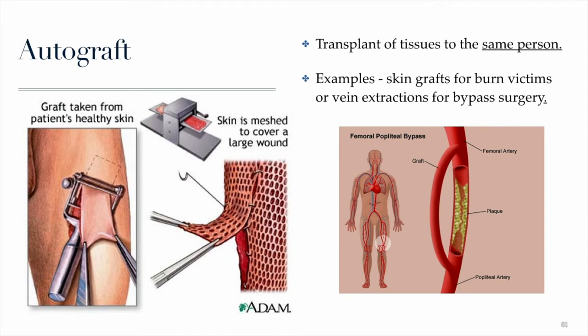A very common example of autografts is the removal and grafting of a vein from one part of the body, usually the thigh, and grafting it into the heart during bypass surgery, which we'll discuss in more detail in the next lesson. Another common example is skin grafts, which are usually a treatment for burn patients. When people have third-degree burns and need living skin to replace dead and burned skin, skin grafts are used. A graft is taken from a part of the patient that has healthy skin — oftentimes the thigh, back, or buttocks.